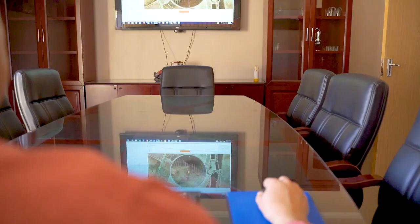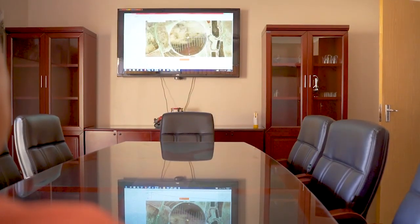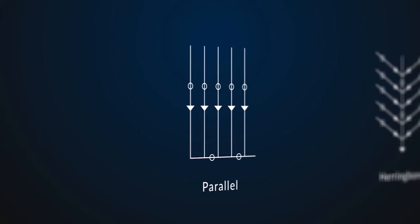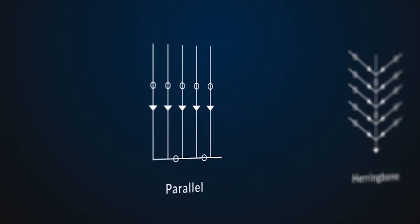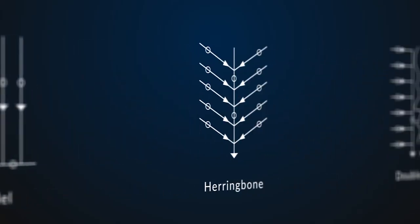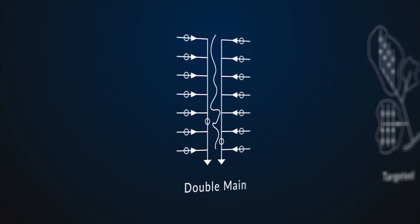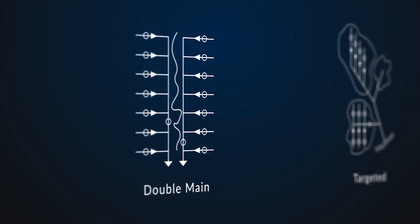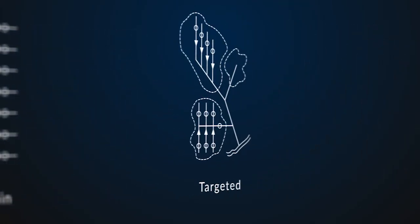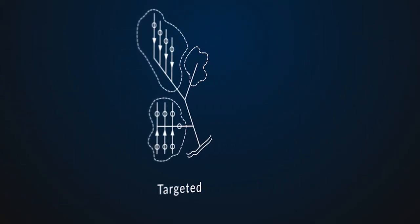A type of design suited for the site should be determined. If only a subsurface drainage system is used, the layout of the system must be determined, be it targeted, herringbone, double main, or grid.